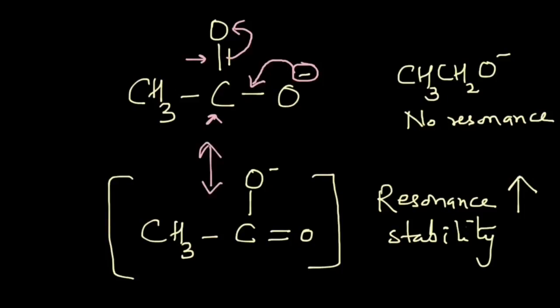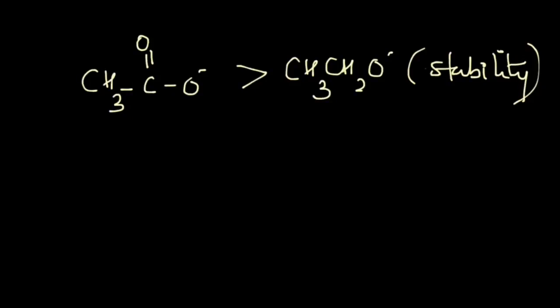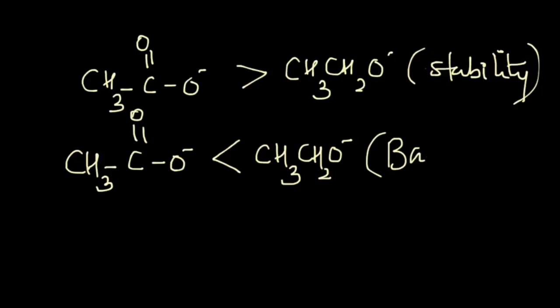So the first species, that is CH3C=O-O-, is more stable than CH3CH2O-. And because of this the basic strength follows the reverse order, that is CH3C=O-O-, also known as the acetate ion, is less basic than CH3CH2O-. This is the order of basic strength.